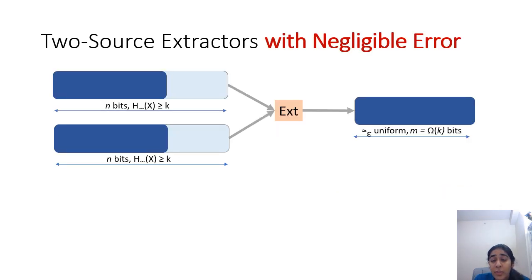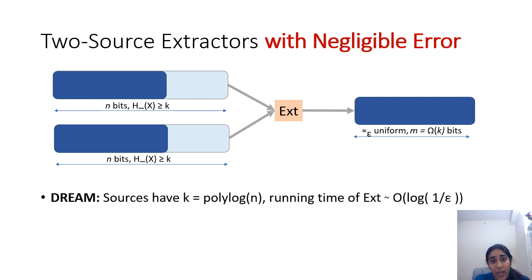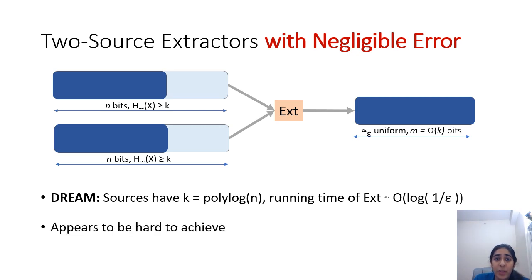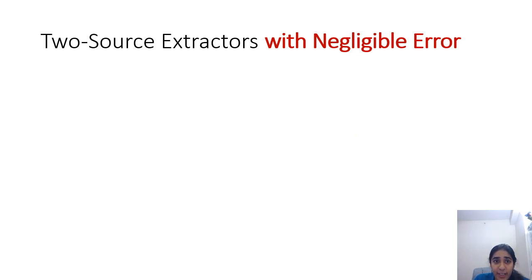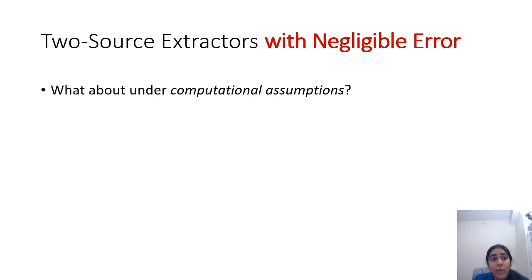The dream, especially from a crypto point of view, would be to have information-theoretic two-source extractors where both sources have polylogarithmic min entropy and the error of the extractor is negligible in n — or alternatively, the run time is inversely proportional to log of 1/epsilon and not 1/epsilon itself. This appears to be hard to achieve, and it's unclear if this is even possible in the information-theoretic setting. So we ask: is this dream any easier to achieve if we make computational hardness assumptions and use cryptography?